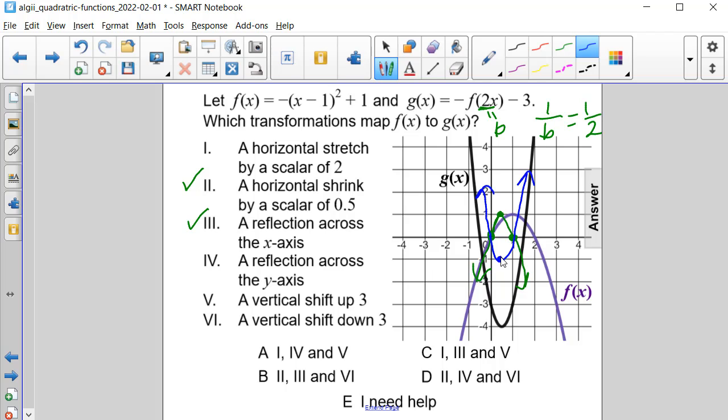And then from here, it went down 1, 2, 3. So this was the reflection. And then this is our k value, or that vertical shift, going down 3. So our answers here are 2, 3, and 6. Answer choice B.